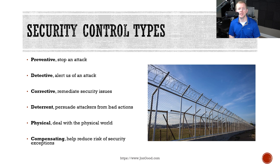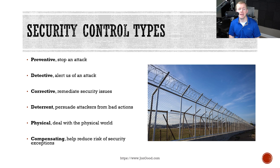Corrective controls remediate security issues after they've already occurred, such as restoring a backup on a compromised system. Deterrent controls try to persuade somebody to not violate security policies — for example, security cameras can be used as a deterrent because somebody committing a violation doesn't want to be seen. Physical controls are some kind of physical item, such as a fence or door locks. Compensating controls are used to aid situations where we make exceptions to security policies, and they help to reduce the risk of that exception.